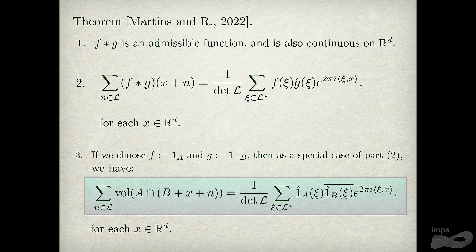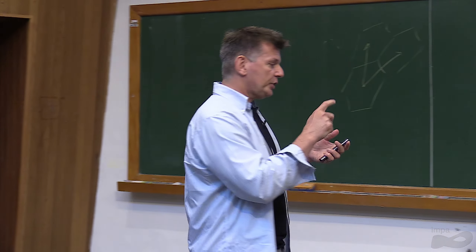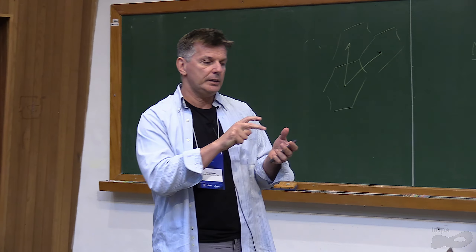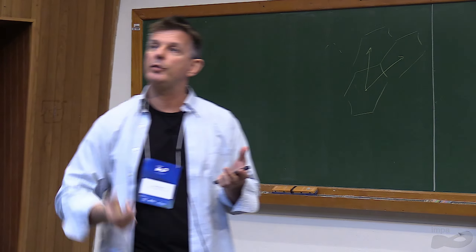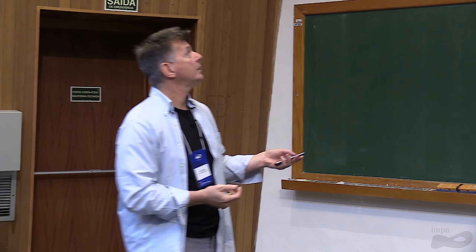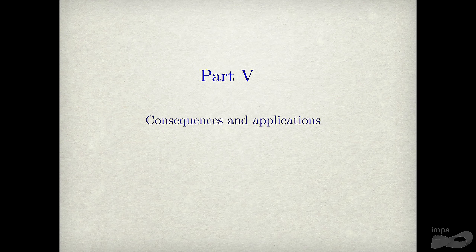This is basic harmonic analysis, but perhaps kind of cute. The version of Poisson summation we use applies to a function F that is compactly supported, continuous, and whose Fourier transform is in L1.